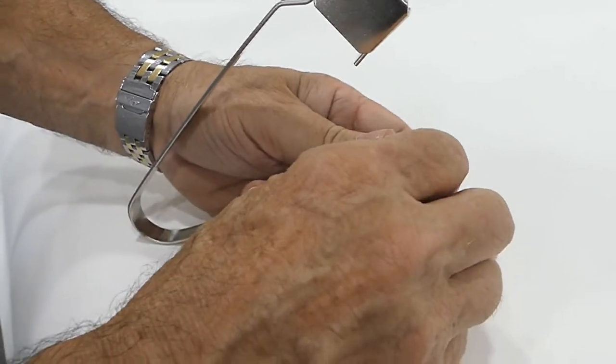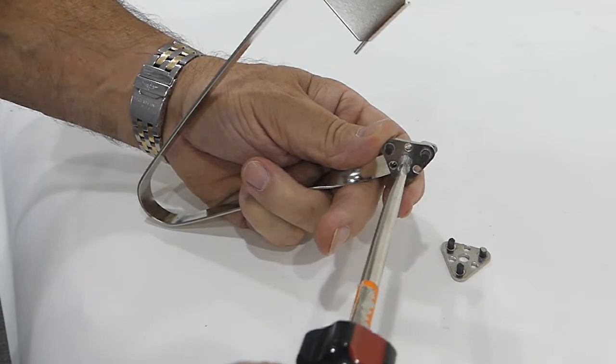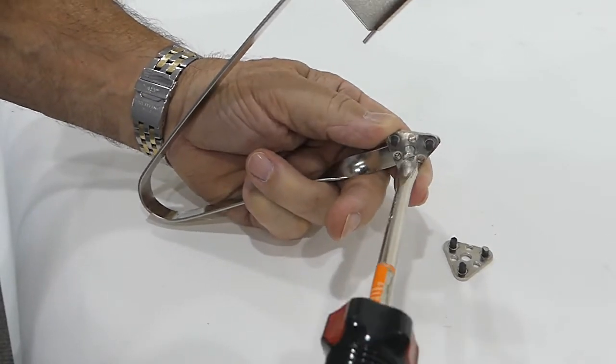Position the flints just like we have them here, so one is right at the tip of the triangle, and then tighten the screw.